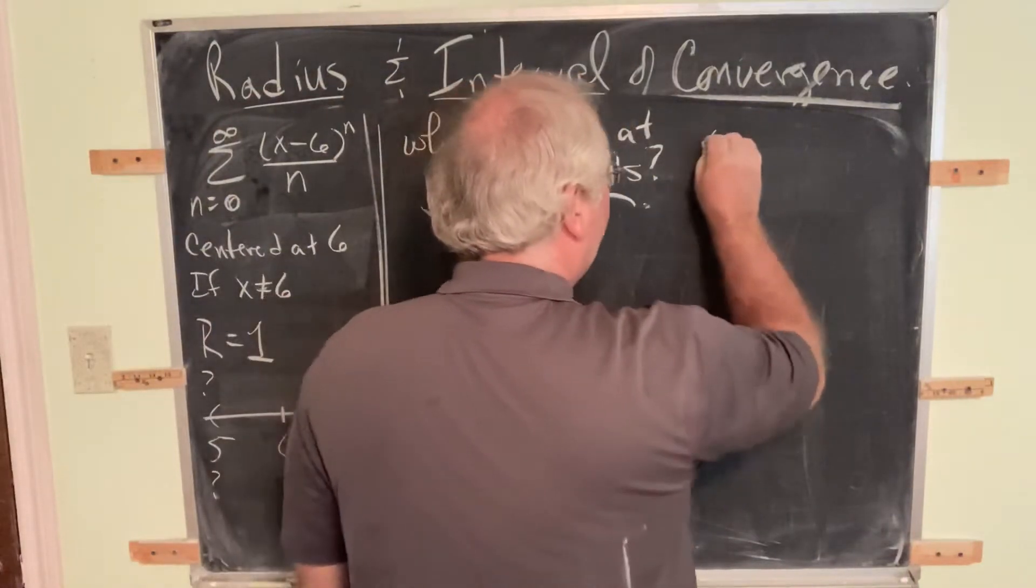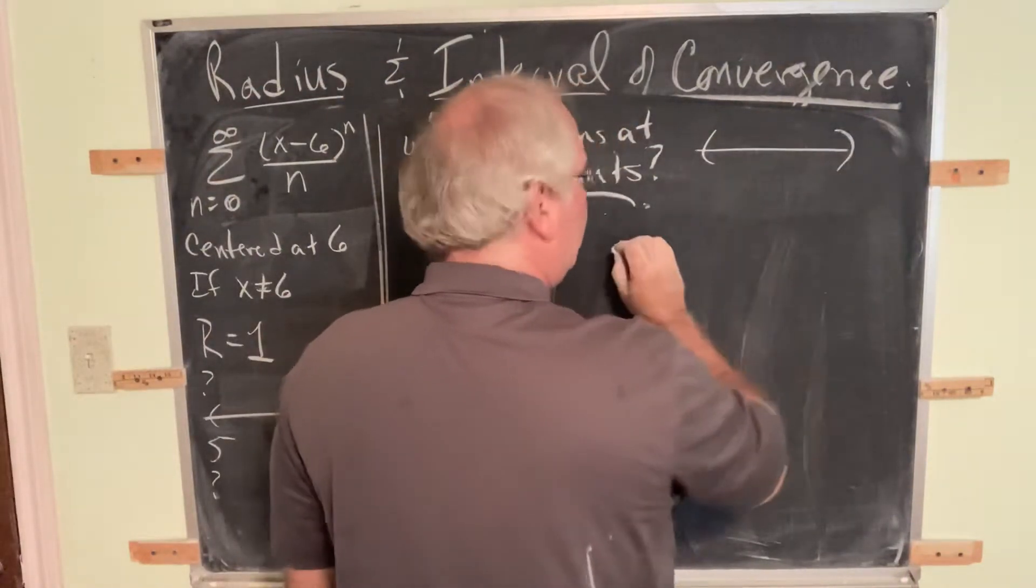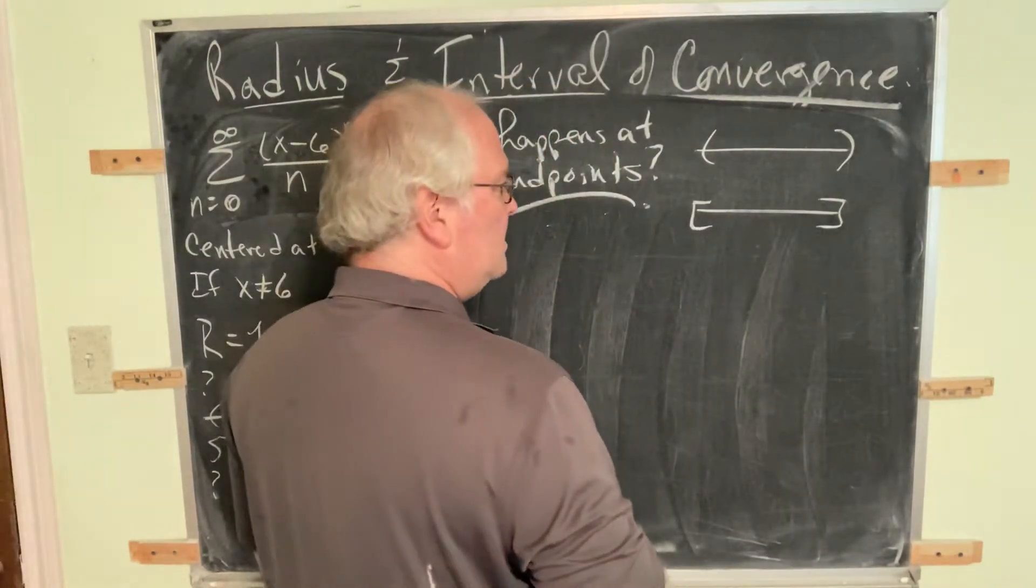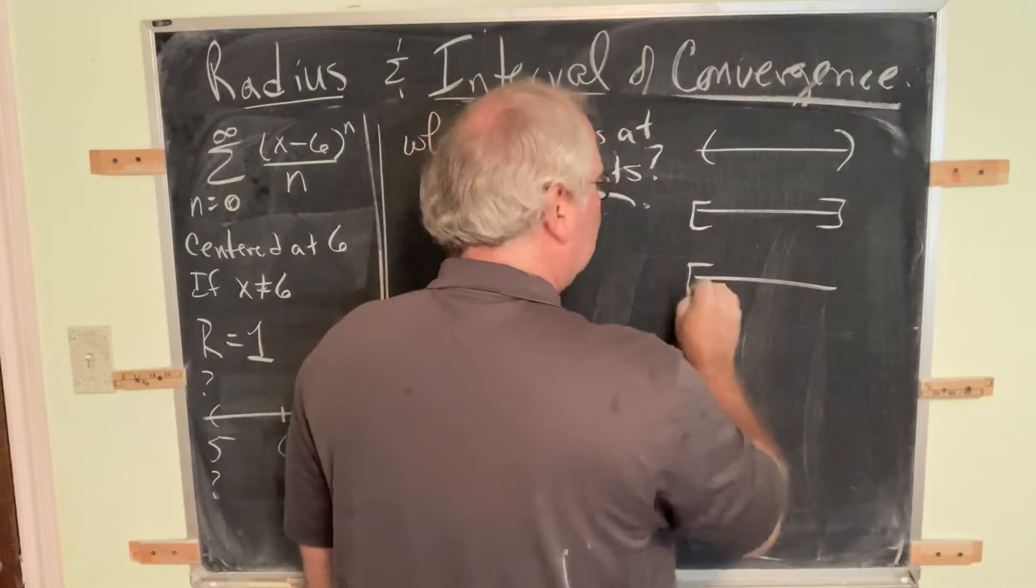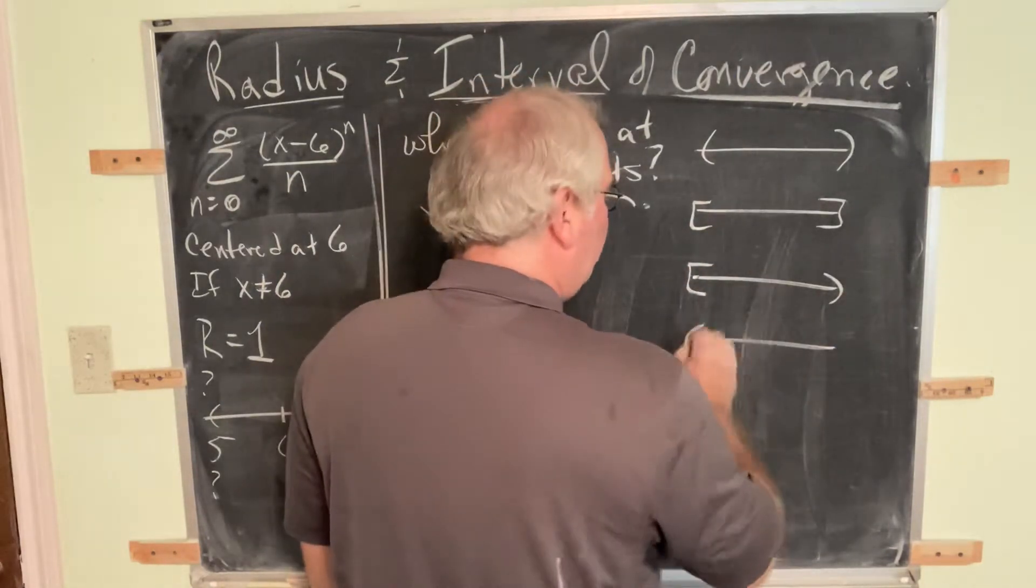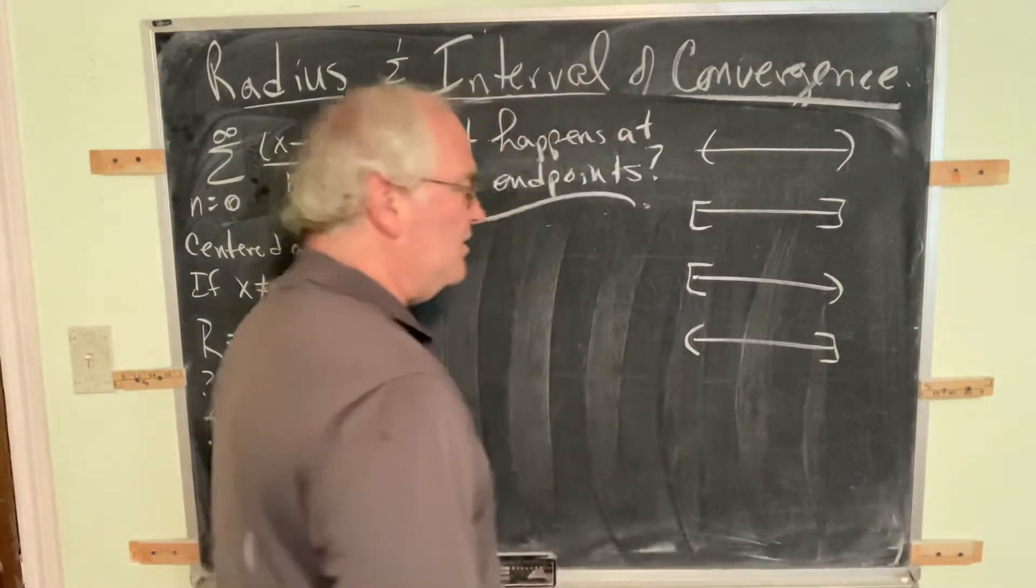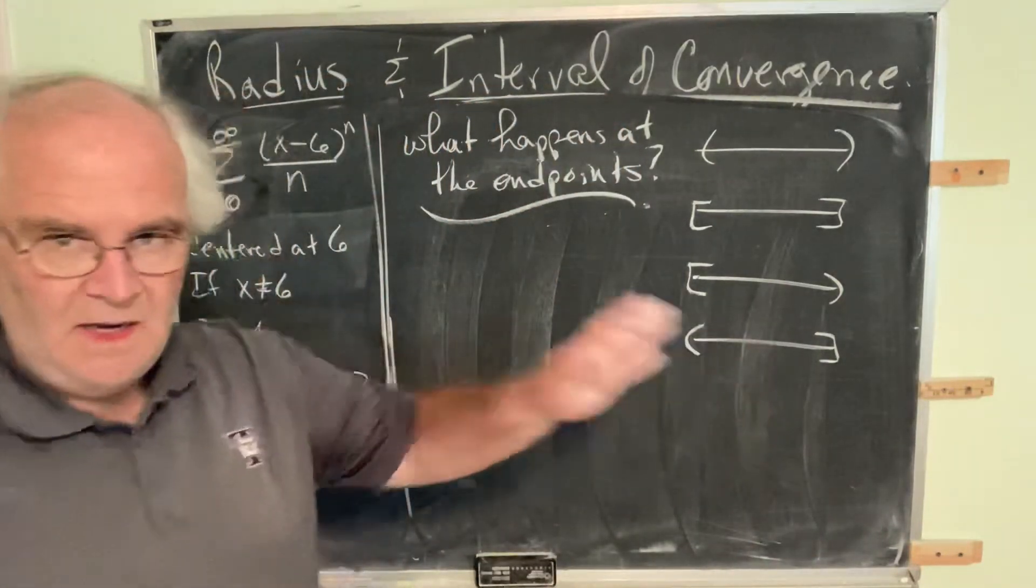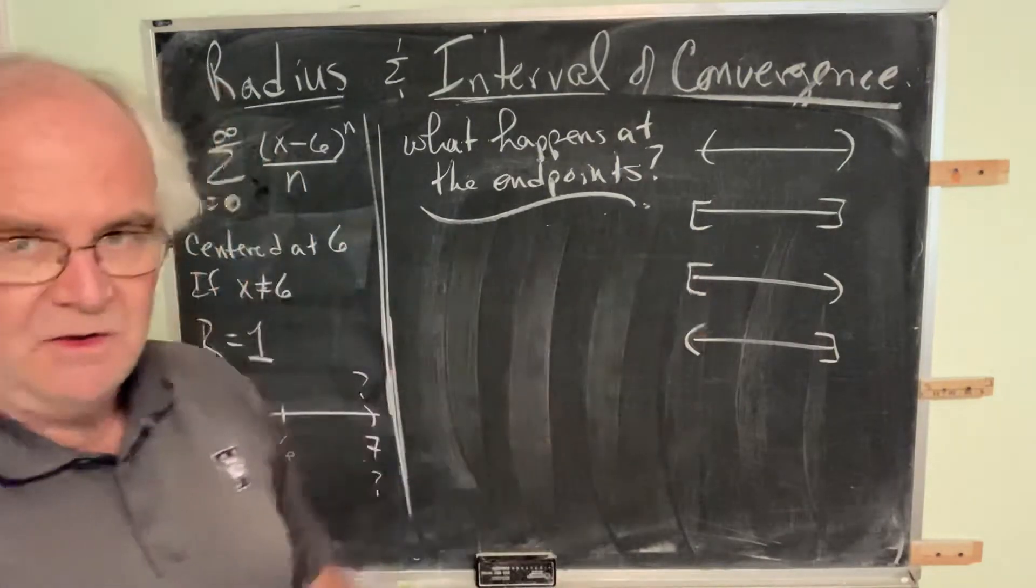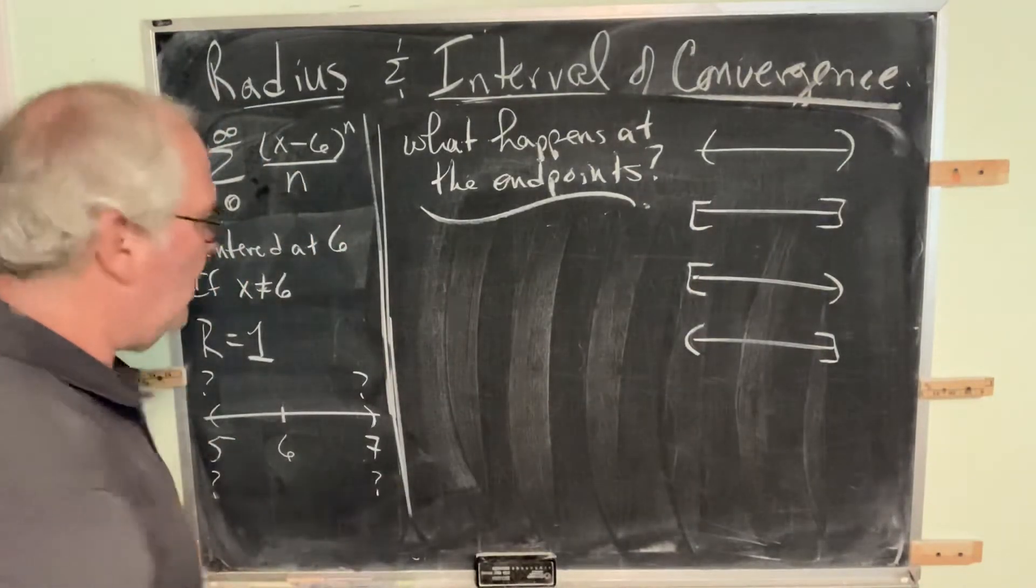It could be that it's the open interval. It could be closed at both ends. It could be closed at the left and open on the right. It could be open on the left, closed on the right. Any one of those four is, in principle, a possibility. What we're going to do is find out which one is the case.